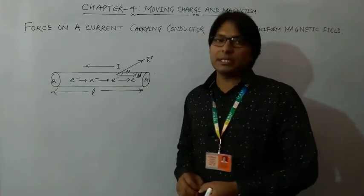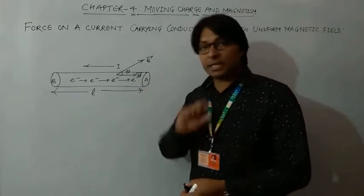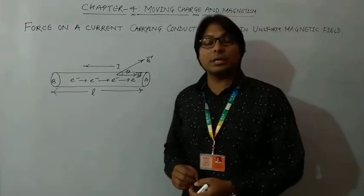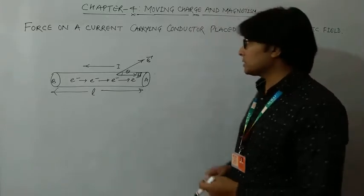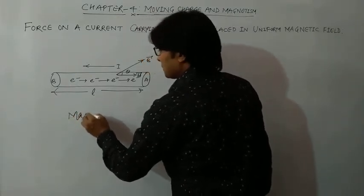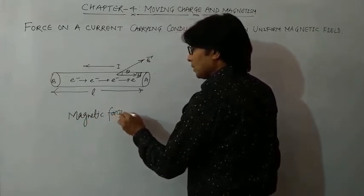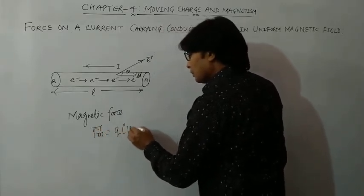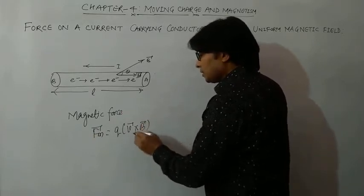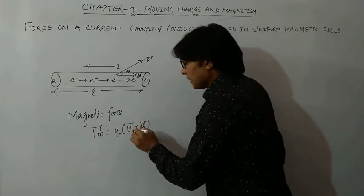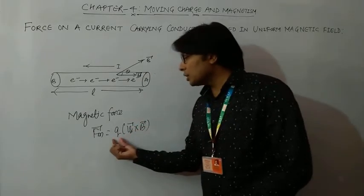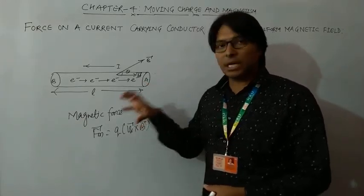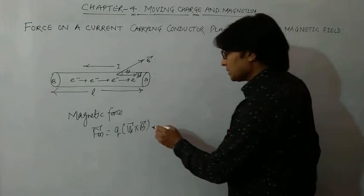The force will be exerted because we have studied the magnetic force on a moving charge in a uniform magnetic field. The formula is: Fm vector equals Q times (V vector cross B vector). Instead of V vector we will use Vd vector, the drift velocity of the electrons, and we will calculate the total charge using charge density — the number of electrons per unit volume.